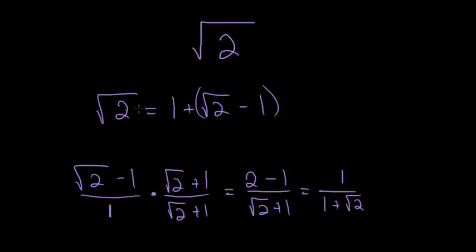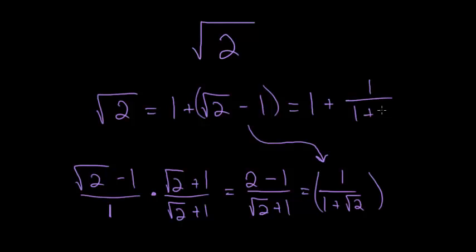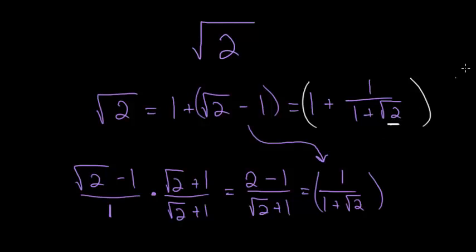So now we know that the square root of 2 is 1 plus this expression here, which we know is equal to 1 over 1 plus root 2. So root 2 is 1 plus 1 over 1 plus root 2. Since we have a square root of 2 in this denominator, we know that the square root of 2 is equal to this entire thing, so we can substitute all of this in for the square root of 2 in that denominator.